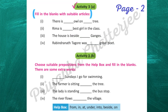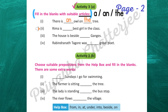Next, activity 3a: fill in the blanks with suitable articles. Let's come to the answers. There is an owl on the tree. Rima is the best girl in the class.